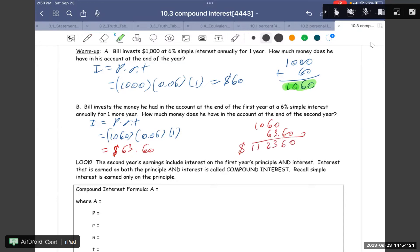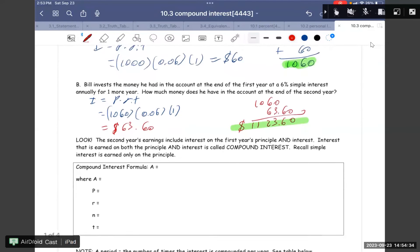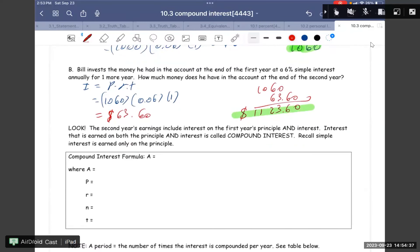So at the second year we have $1,123.60. Okay, so right now look, the second year's earnings include interest on the first year's principal and the interest. The interest that's earned on both principal and interest is called compound interest. We call simple interest earned only on the principal.